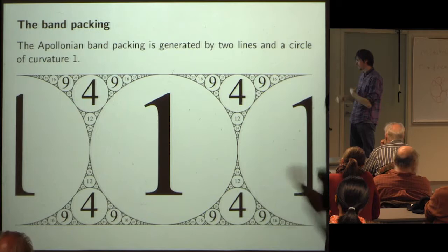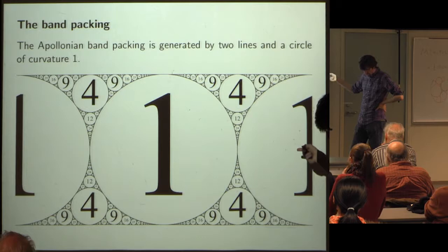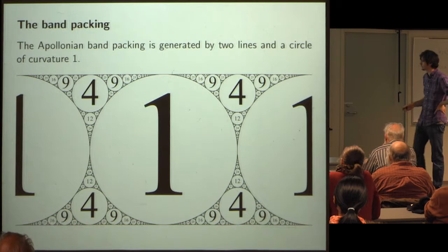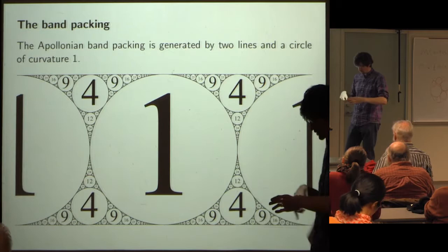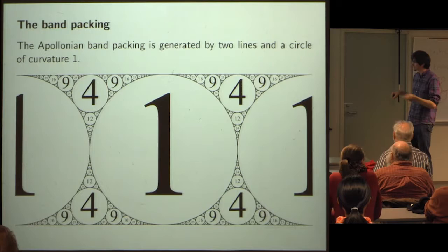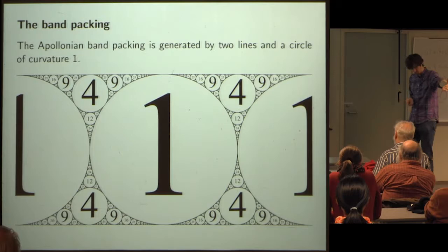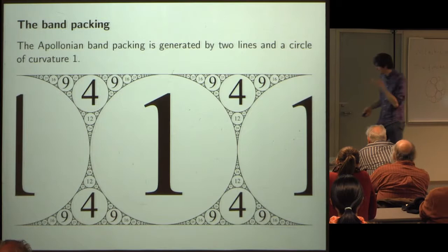There are number theorists studying these circle packings. One big open question is: given an integer Apollonian circle packing, what curvatures actually appear? There are local obstructions — certain residues mod 24 are not allowed. The conjecture is that for any given integer Apollonian packing beyond a certain integer, these local obstructions completely determine which curvatures are in or out. This is the local-to-global conjecture.